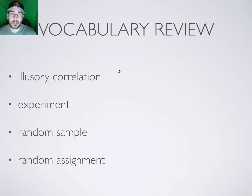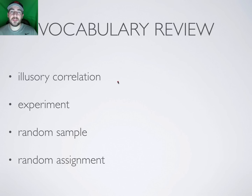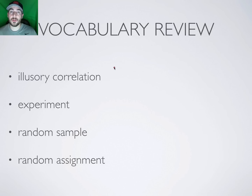An illusory correlation is a correlation that doesn't exist. For example, if you're a Seahawks fan and you wore your lucky jersey and believe that every time you wear it your favorite player scores a touchdown or plays better because of your jersey — that's an illusory correlation. A correlation that doesn't actually exist.